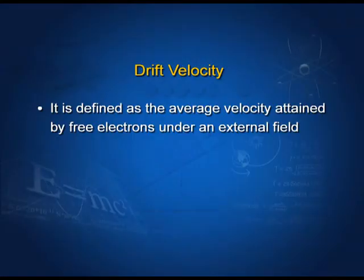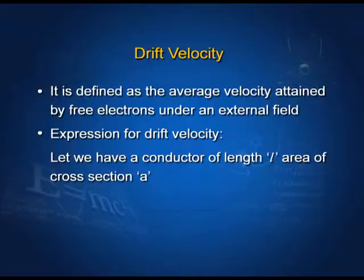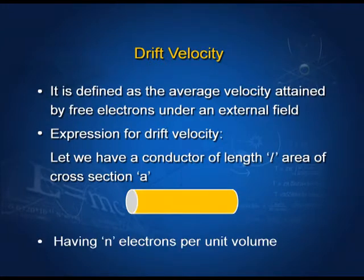Drift velocity is defined as the average velocity attained by free electrons under an external field. Let's study the derivation for drift velocity: we have a conductor of length L, area of cross-section A, having n electrons per unit volume.